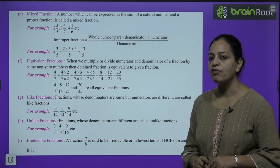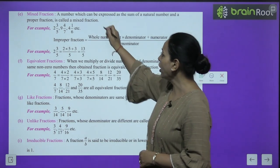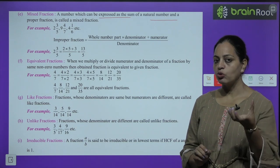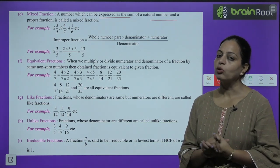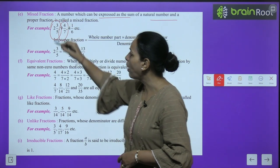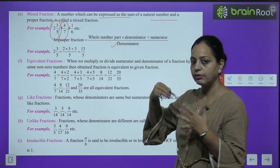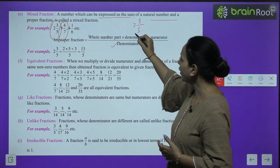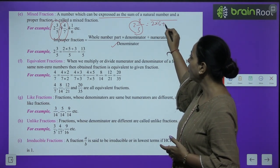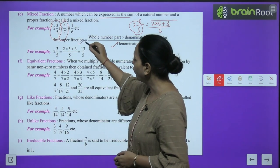Mixed fraction: a number which can be expressed as the sum of a natural number and a proper fraction. Jab hum ek natural number aur ek proper fraction ko combine kar den, wo ban jaata hai hamaara mixed fraction. Like 2 whole 3/5, 9 whole 4/7. We can change mixed fractions into improper fractions. Like 2 whole 3/5 — multiply the denominator with the whole part: 2 × 5, then add the numerator.